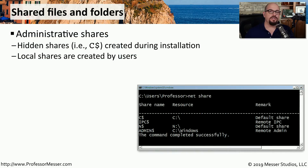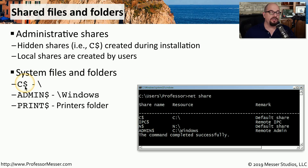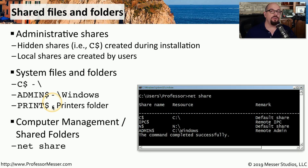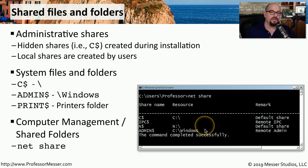There are a number of shares created automatically by the operating system during installation — these are administrative shares, and most are hidden from view. Any share with a dollar sign at the end is automatically hidden; for example, C$ is the share for the entire C drive. Other examples include the admin$ and print$ shares. You can view shares available on your system by going to the command line and using the net share command to list all share names and their associated resources.